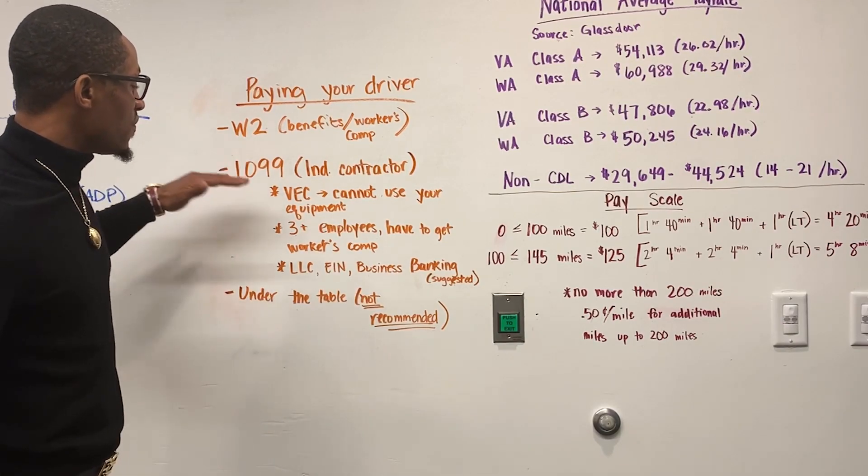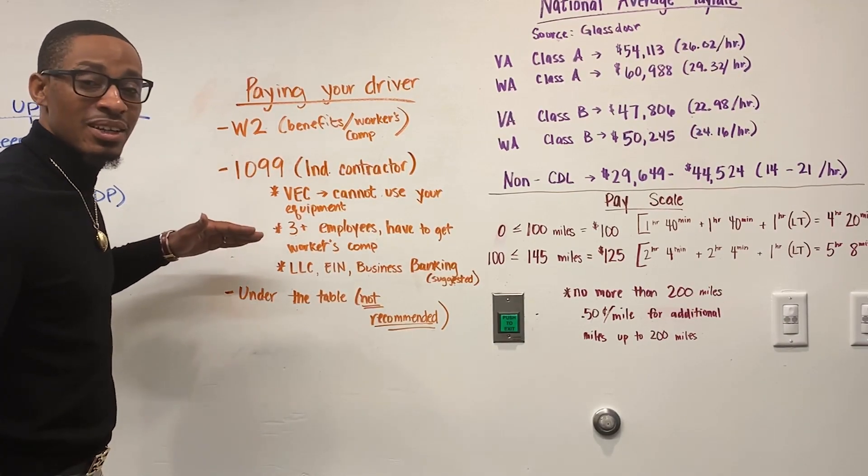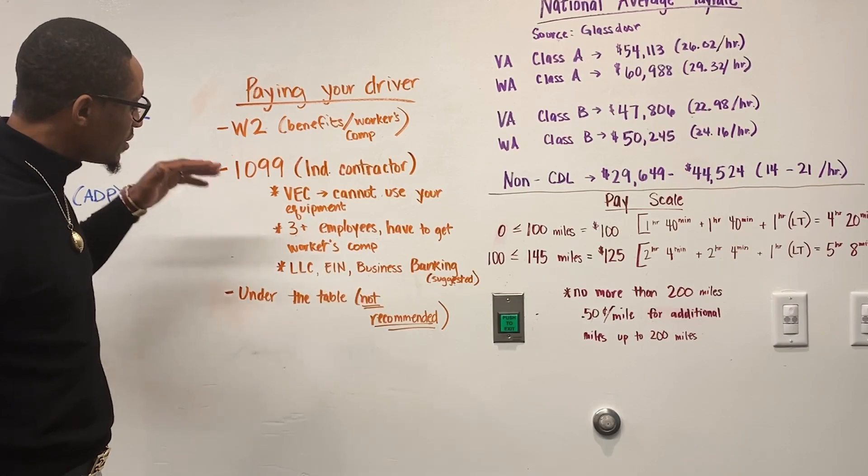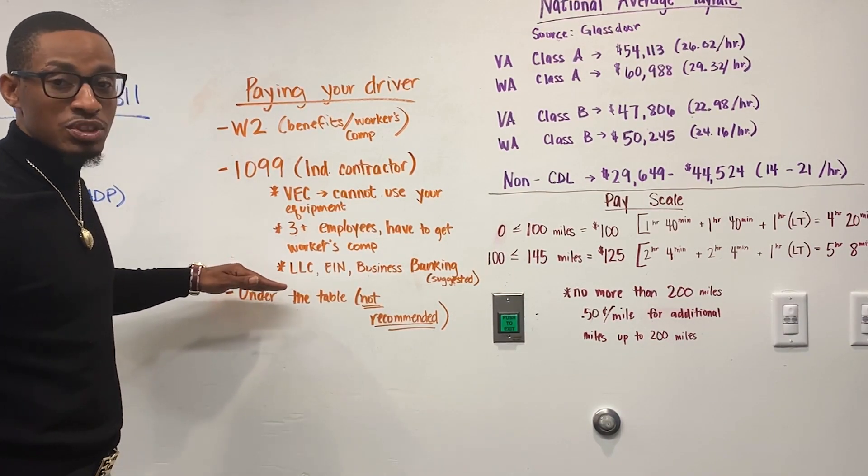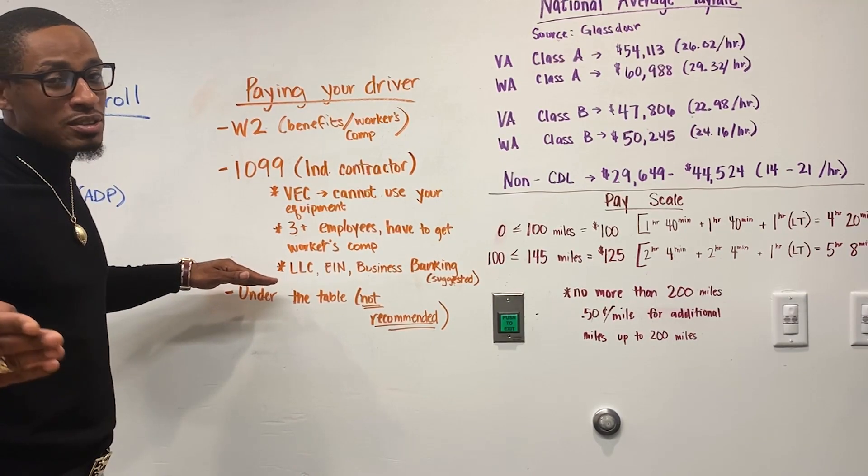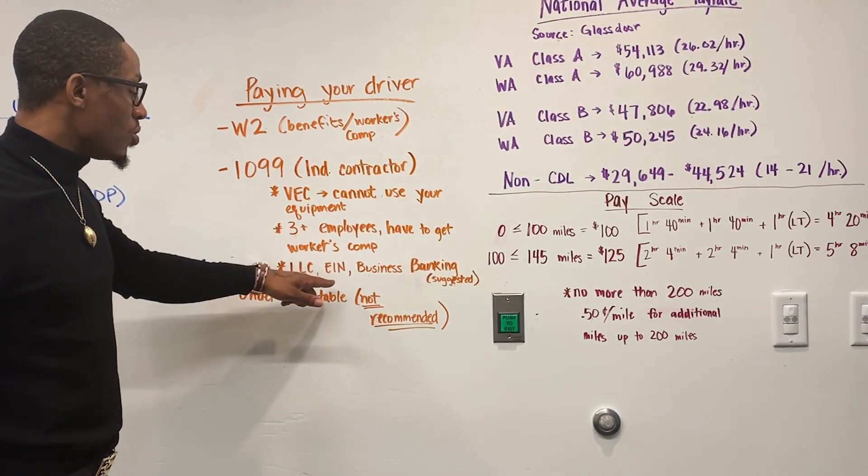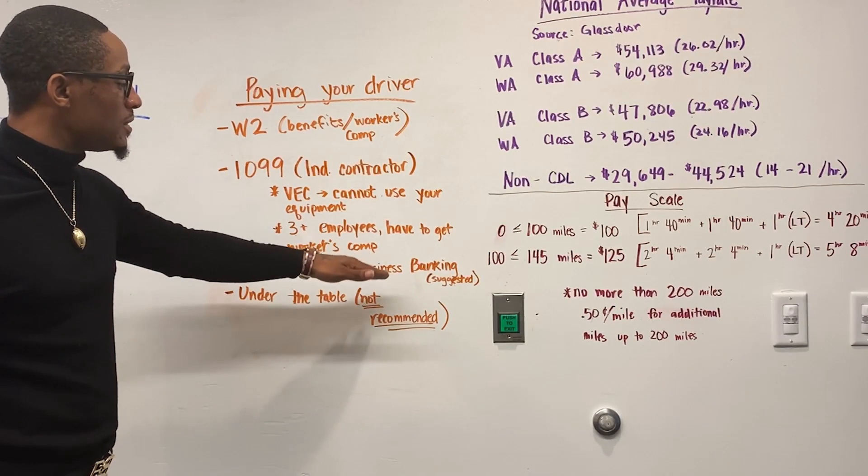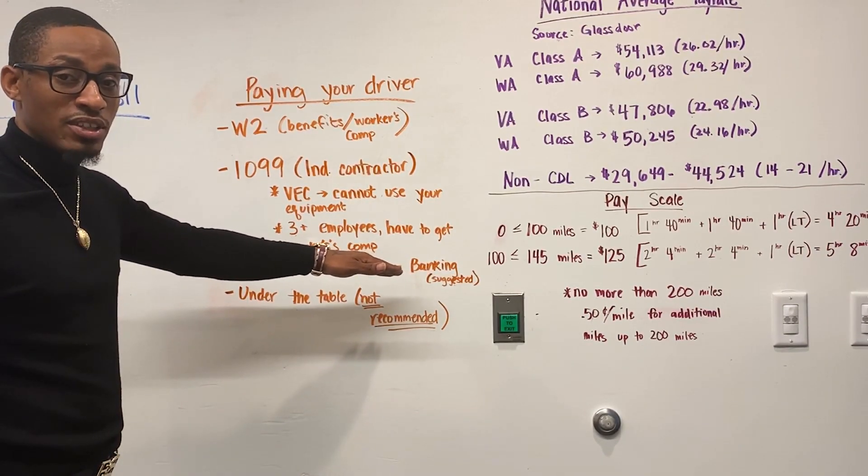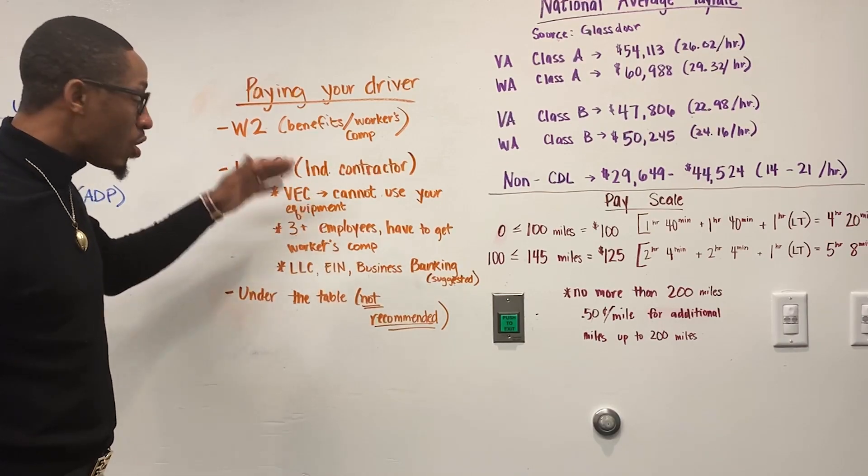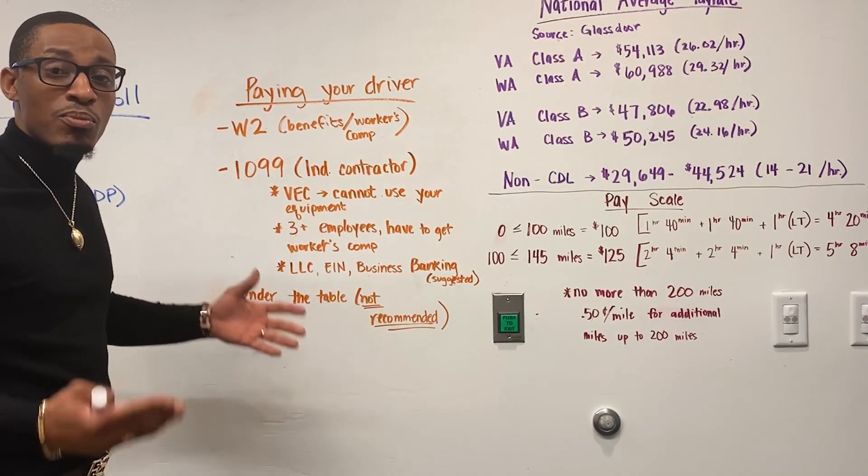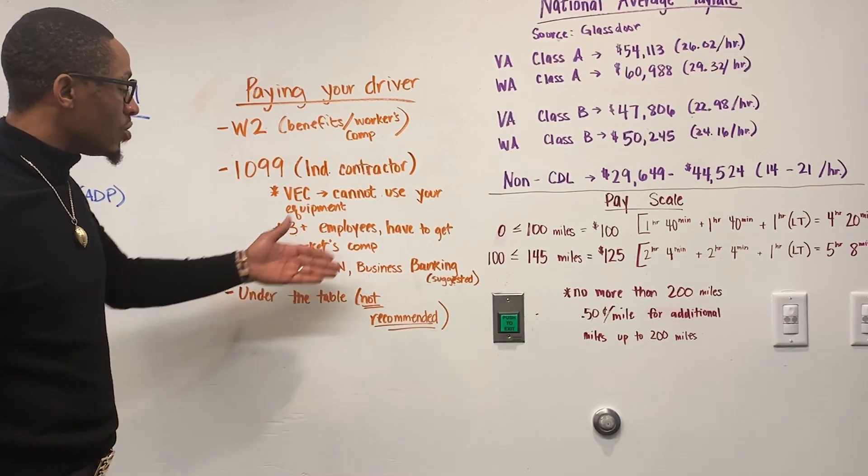So, with knowing that information about a 1099 contractor, I highly suggest you have your drivers get an LLC, which is about $150 and in some states is less. You don't have to get an EIN, but it's recommended and then a business banking account. So, that not only will you be protected, your driver will also be able to write off a whole lot more by having those credentials.